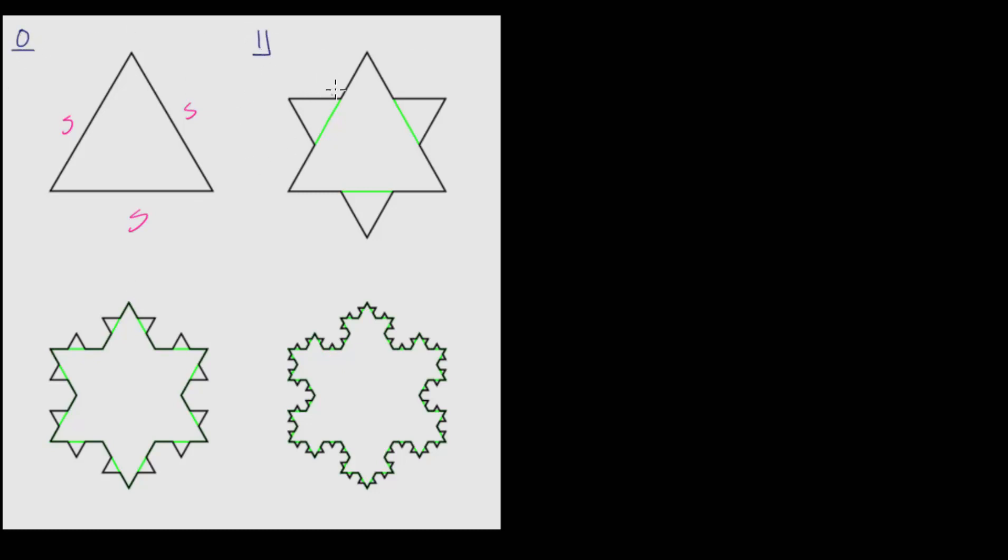This is step 1 when we add in equilateral triangles in the middle of each of the side lengths after splitting them into three equal pieces. And we'll carry out that process infinitely many times. This is step 2, this is step 3, and so on.